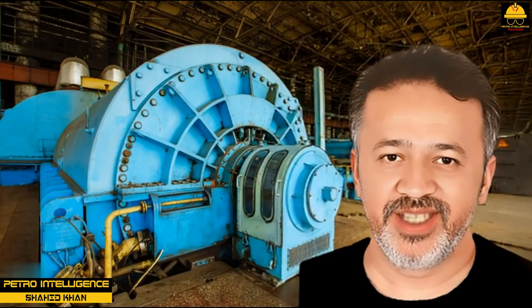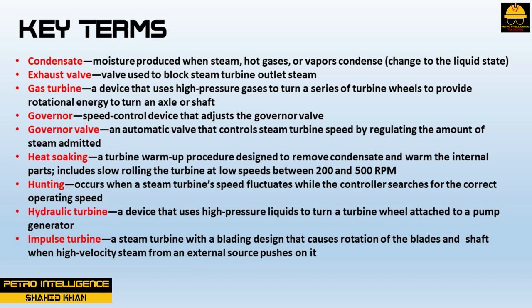Before starting the course, let us have a look at key terms. Condensate is moisture produced when steam, hot gases, or vapors condense — that is, changed to the liquid state. Exhaust valve is a valve used to block steam turbine outlet steam. Gas turbine is a device that uses high pressure gases to turn a series of turbine wheels to provide rotational energy to turn an axle or shaft. Governor is a speed control device that adjusts the governor valve. Governor valve is an automatic valve that controls steam turbine speed by regulating the amount of steam admitted. Heat soaking is a turbine warm-up procedure designed to remove condensate and warm the internal parts, including slow rolling the turbine at low speeds between 200 and 500 RPM.